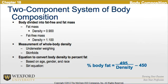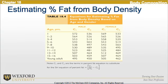Looking more closely at the two-component system of body composition, the body is divided into fat-free and fat mass, where fat mass density is approximately 0.9 and fat-free mass density is approximately 1.1. We can use underwater weighing and skinfolds to measure whole body density. The equation to convert body density to percent fat is based on age, gender, and race, using the Siri equation. Estimating the percentage of fat from body density is listed in table 18.4, including values relative to age and gender.